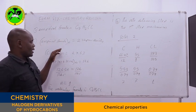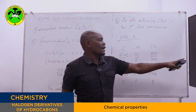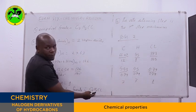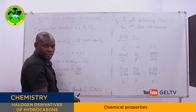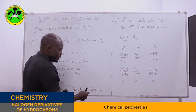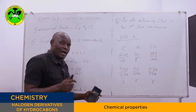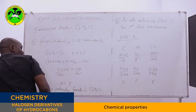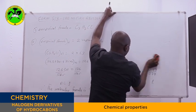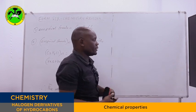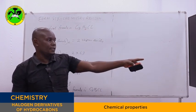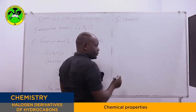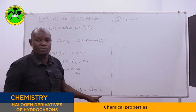That is the first part of our question. For the second part, we have been asked to write the isomers of compound A that can exist and their names. By looking at the molecular formula C₇H₇Cl, since we have 7 carbon atoms, it means that our halogen derivative of hydrocarbon contains a benzene ring or aromatic ring. To draw isomers, they must have 7 carbon atoms, 7 hydrogen atoms, and 1 chlorine atom.